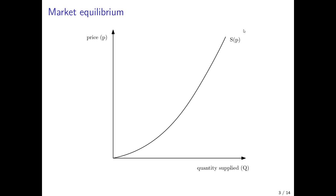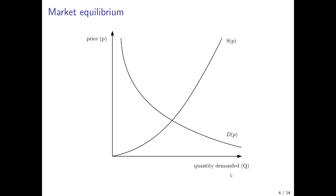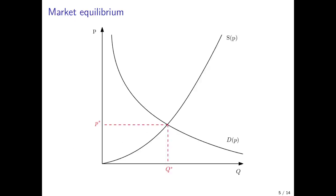We start by drawing the supply curve in the diagram where we have the price level on the vertical axis and the quantity on the horizontal axis. Here it's quantity supplied because we draw the supply curve, and now we draw in the same diagram the downward sloping demand curve where we have quantity demanded on the horizontal axis. Since the supply curve is upward sloping and the demand curve is downward sloping, they will definitely at some point intersect, and this intersection is the market equilibrium.